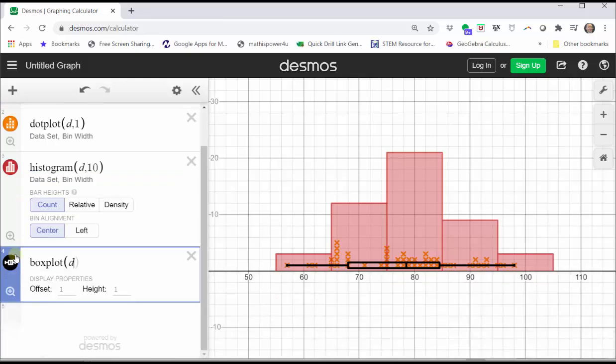Let's close the Desmos keypad. Notice right now the box plot is at the bottom overlapping the dot plot and histogram, but we can change this by changing the offset as well as the height.